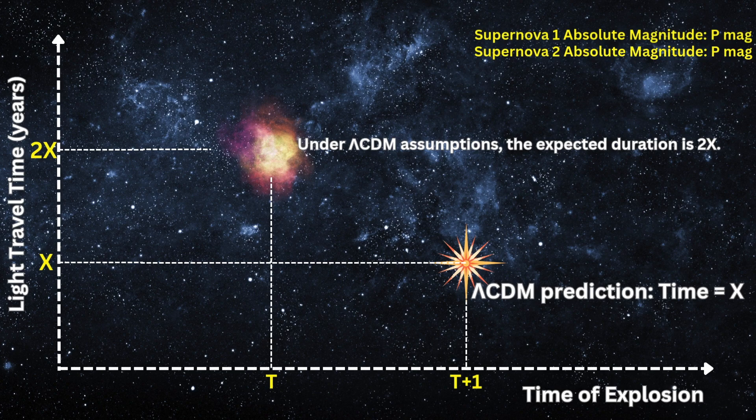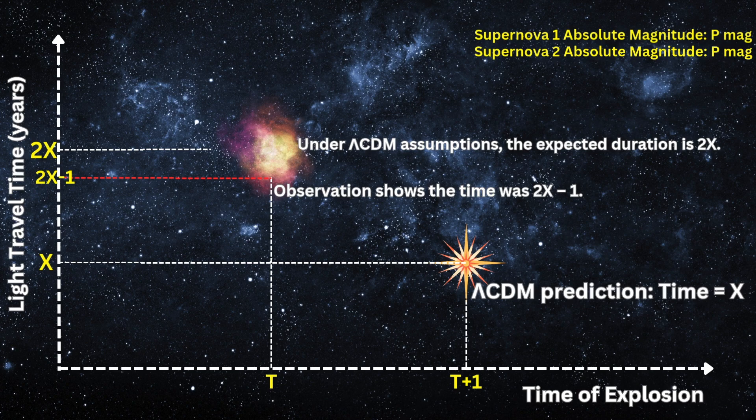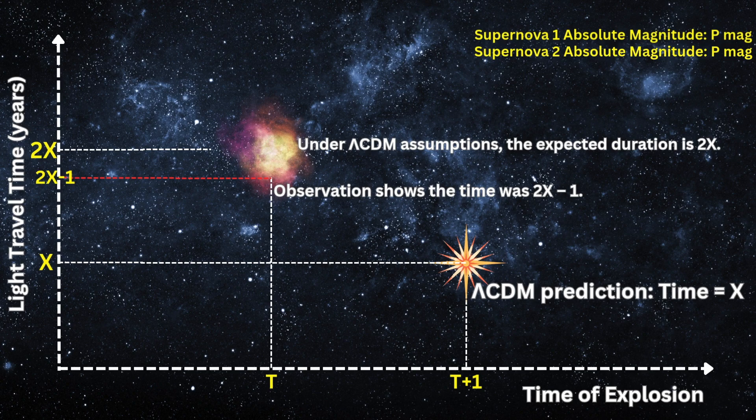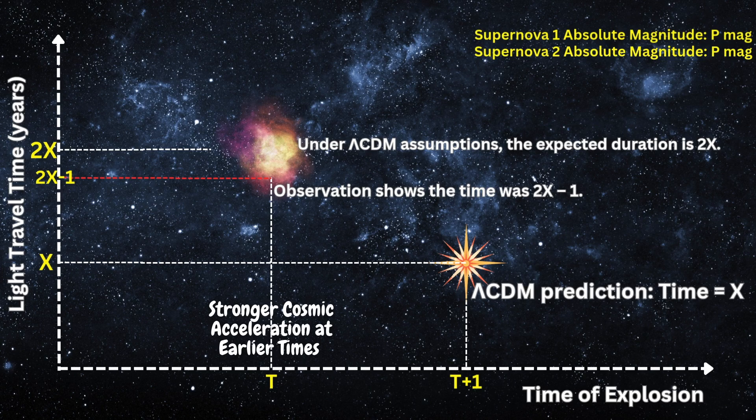But here's the surprising part. Researchers observed that the light didn't take 2x to reach us. Instead, it arrived in 2x minus 1 units of time. What does that mean? It means that the universe at time t was expanding at a faster rate of acceleration than it is today. In other words, the expansion is still happening, but the rate of acceleration is slowing down.